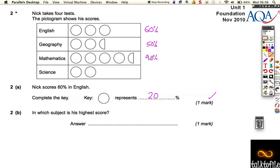He scored 20, 40% in Science. In which subject is his highest score? Well it's kind of obvious, you've just got to remember to count that half up, so it's 90%. His highest score was 90%, but in which subject? It was Mathematics.